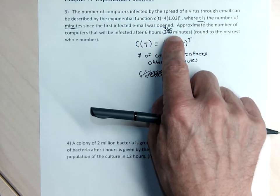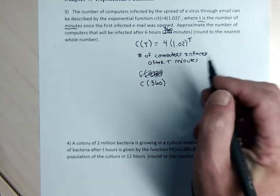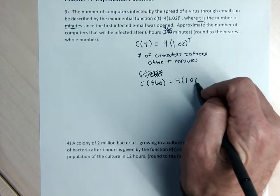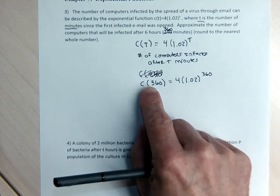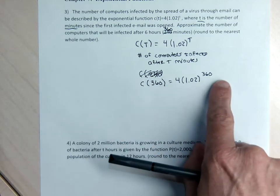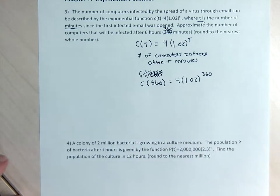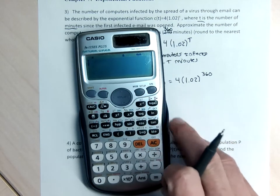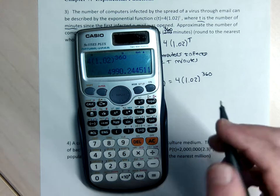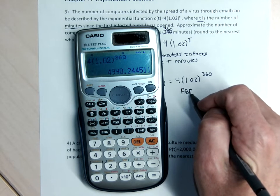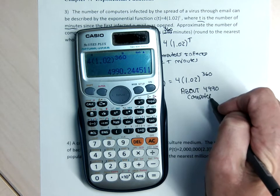Six hours — six times 60 is 360 minutes. So I'm going to find the number of computers infected after 360 minutes, not 240. To do that, on both sides of the equation I'm going to change the T to 360. This says the number of computers that have the virus after 360 minutes is four times 1.02 to the 360th power. Because you can't have a fractional computer infected, I'll round to the nearest whole number — about 4,990 computers will have the virus.